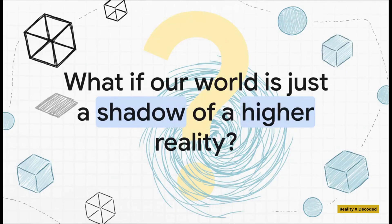That leads us to a final, really big thought. The tesseract is a great model — it shows us how a 4D object can cast a shadow into our 3D world. But what if our entire 3D universe is, itself, just a shadow? What if it's just a projection from some even higher, more complex reality? It really makes you wonder — what are we not seeing?